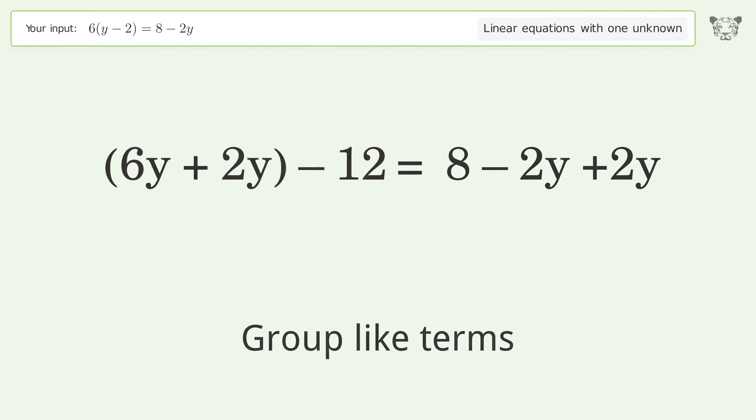Isolate the y - divide both sides by 8. Simplify the fraction. Find the greatest common factor of the numerator and denominator. Factor out and cancel the greatest common factor. And so the final result is y equals 5 over 2.